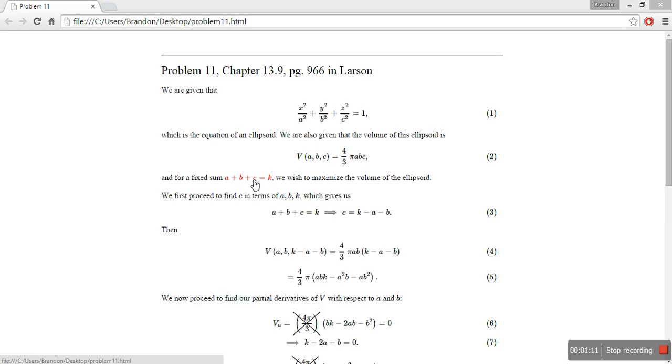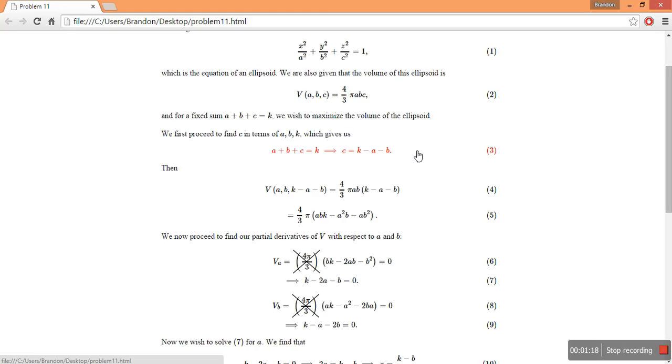And the first thing we're going to do here in step 3, let's see if I can scroll down a little bit, is solve for c in terms of a, b, and k. So I've just subtracted a and b from the left-hand side to the right.